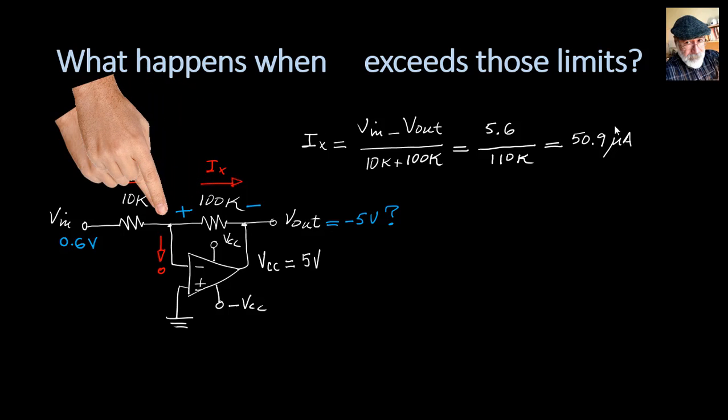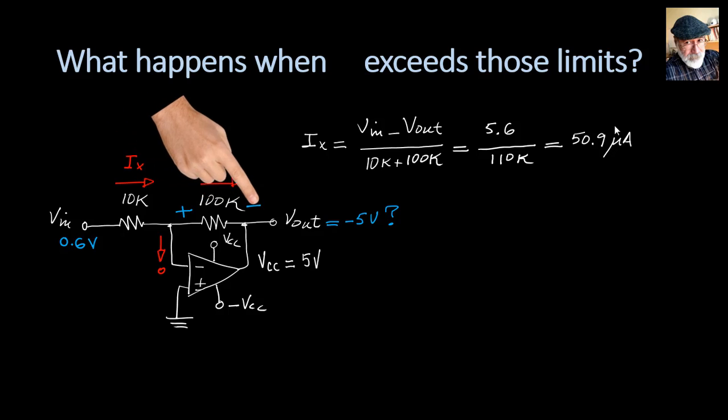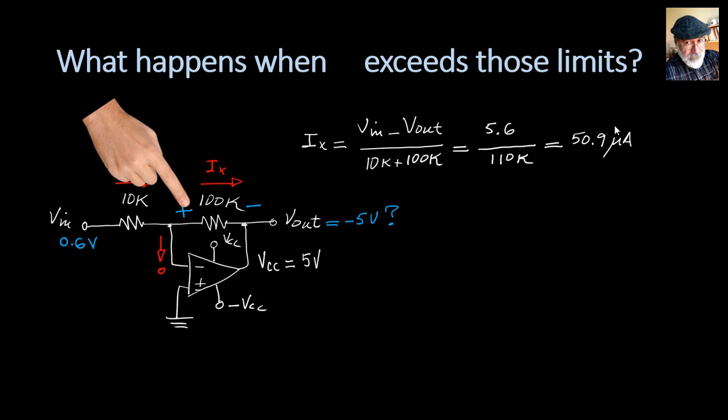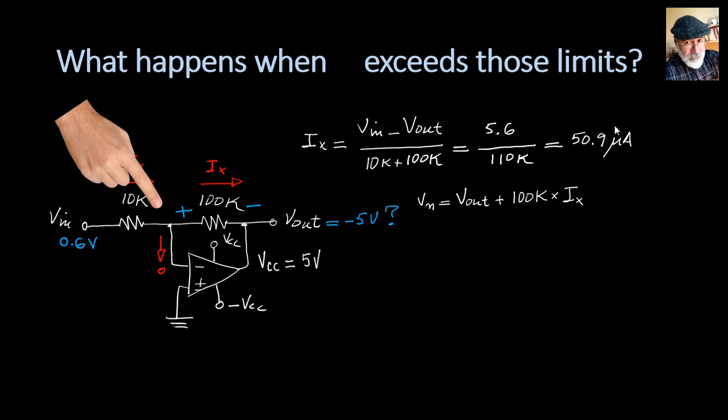That current creates a voltage drop in the 100 kilohm resistor. Ohm's law, right? So Vn is higher than Vout by that drop. Vn is 91 millivolts, which is higher than Vp that has a value of zero in this circuit.